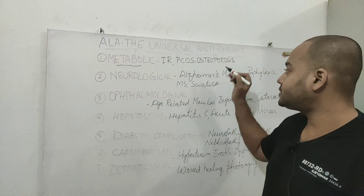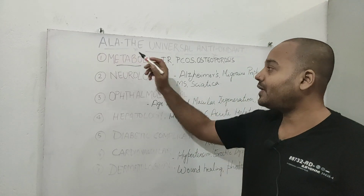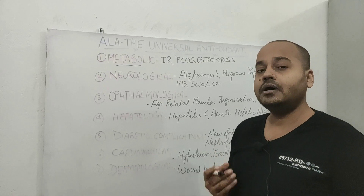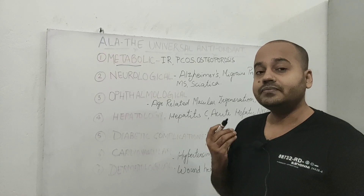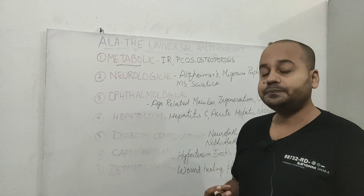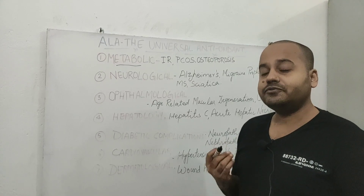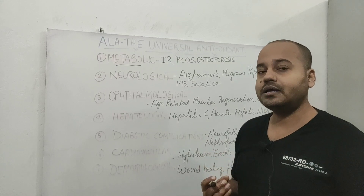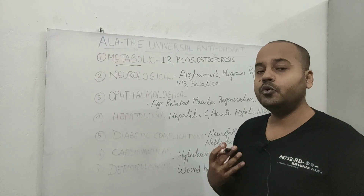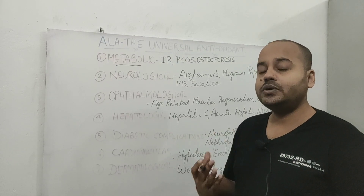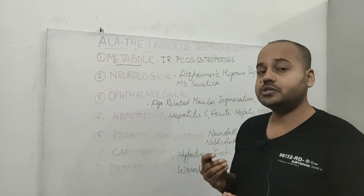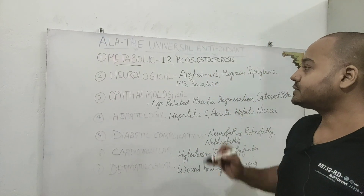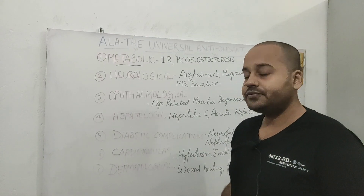In osteoporosis, alpha lipoic acid is a known inhibitor of nuclear factor kappa B (NF-kB) activation. By that virtue, it improves osteopenia — helping your body make more bone, improve bone density, and prevent bone resorption. So it is very good at preventing osteoporosis.